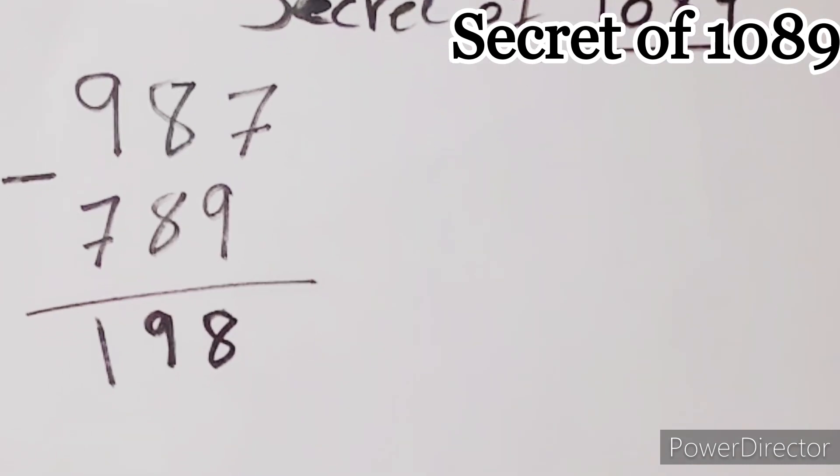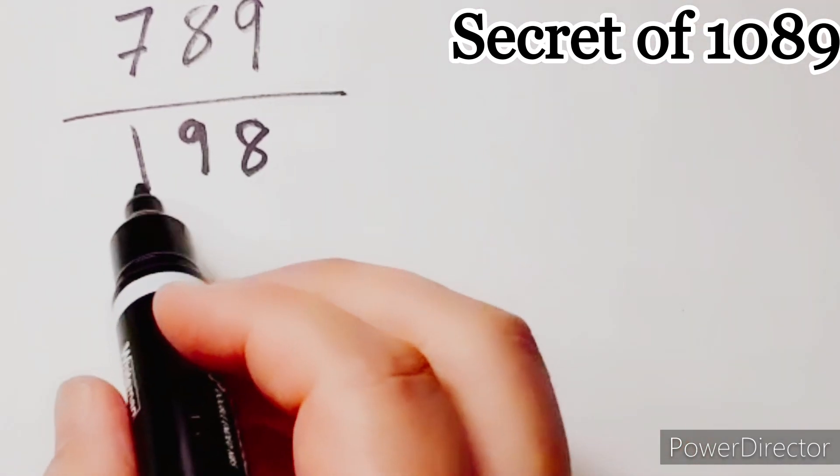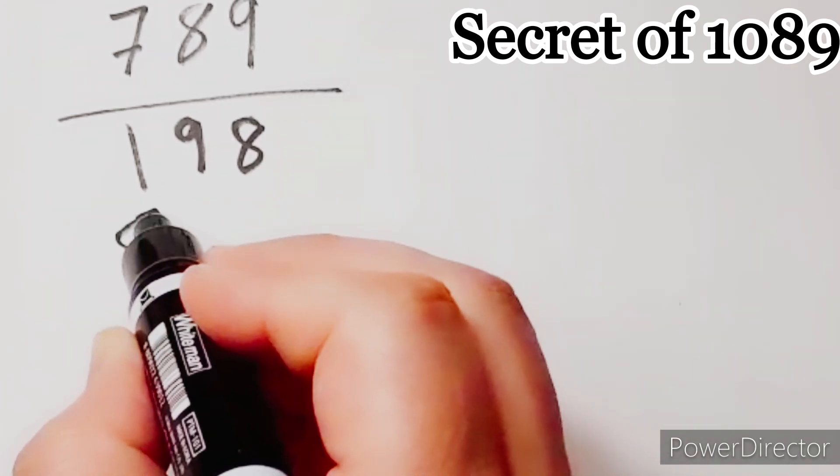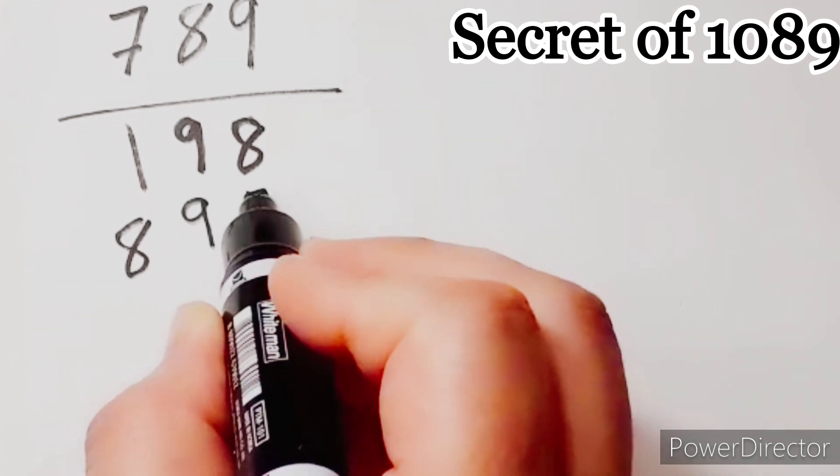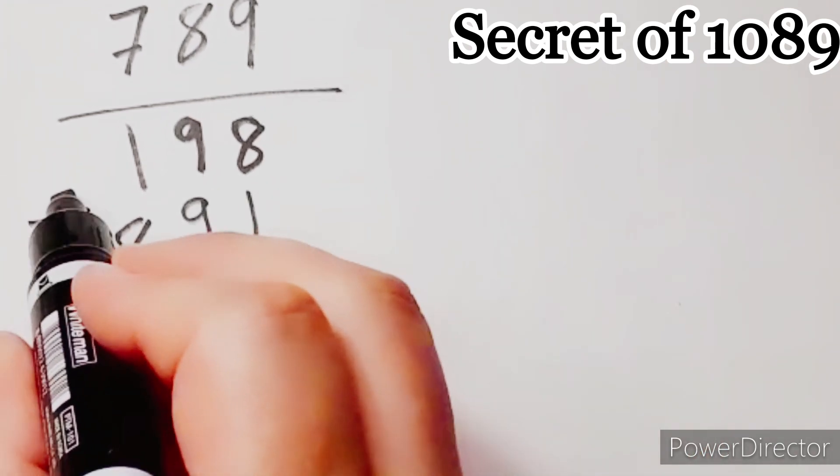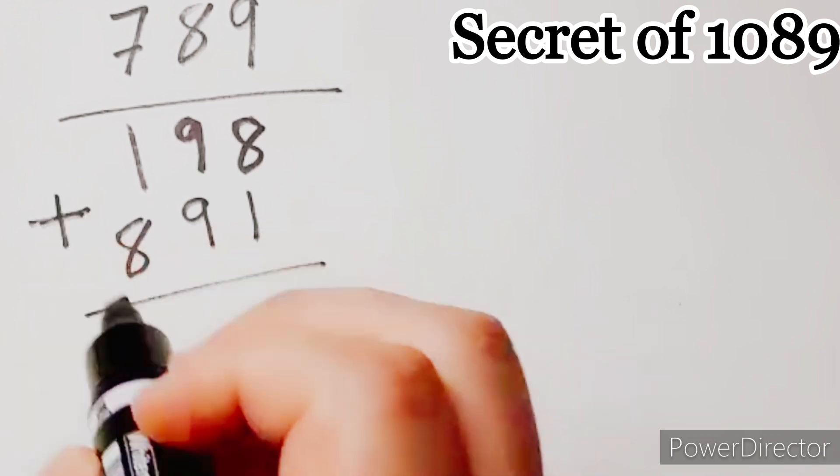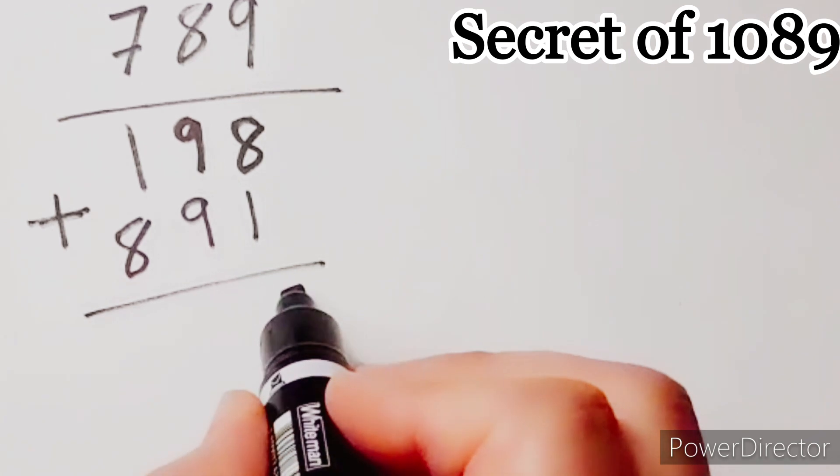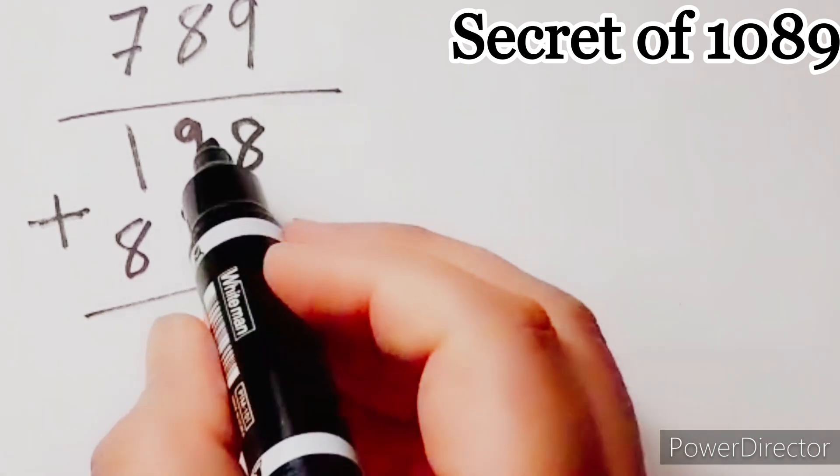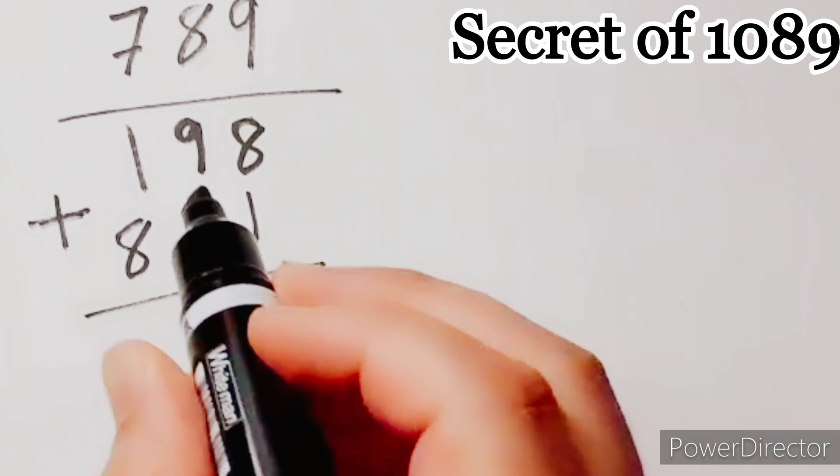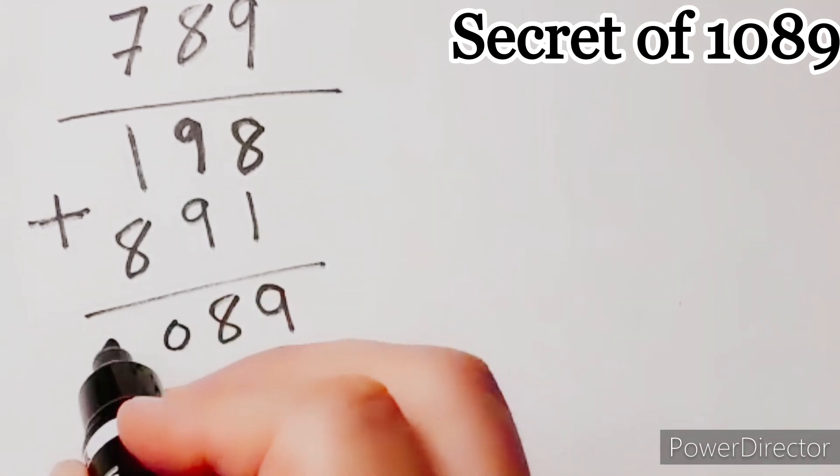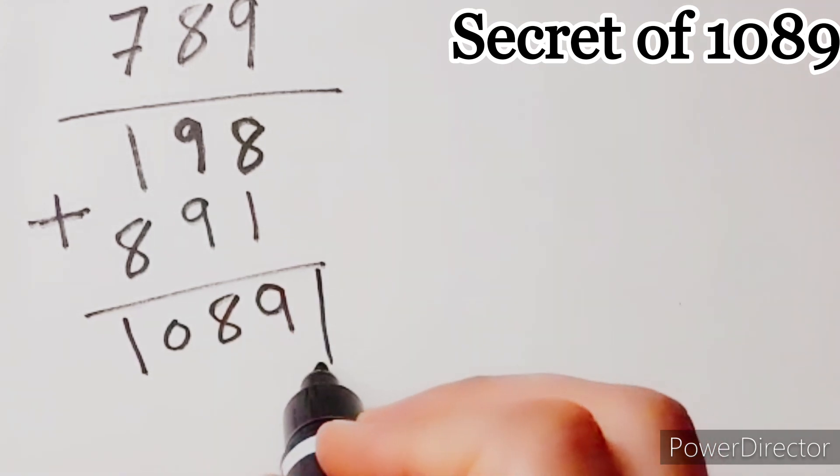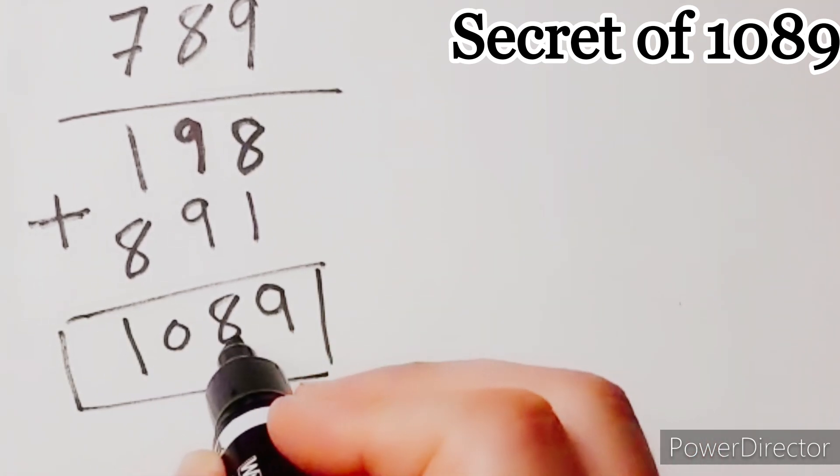The second step, find the inverse of this result, 891. And find the sum of the two numbers, 8 plus 1 equals 9, 9 plus 9 equals 18, 1 plus 8 equals 10. So, the result is 1089.